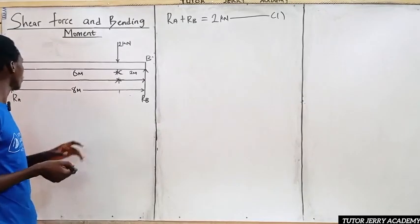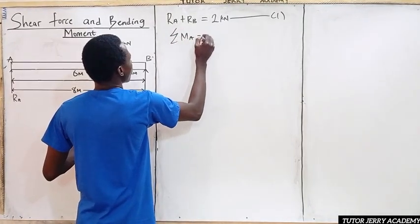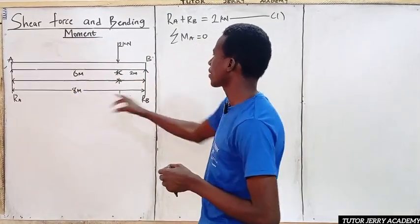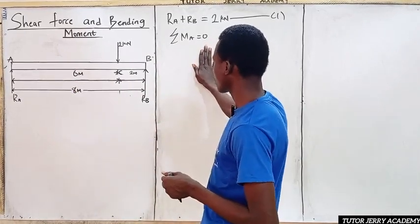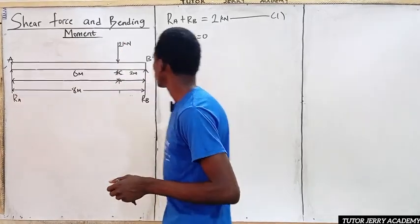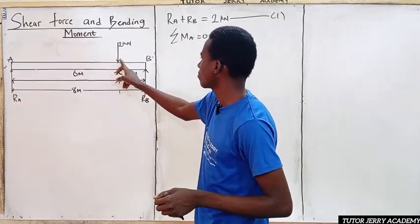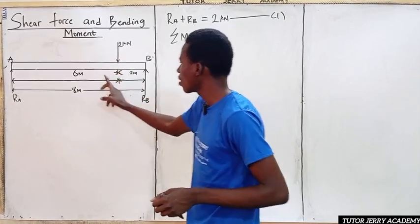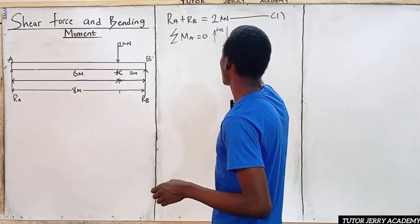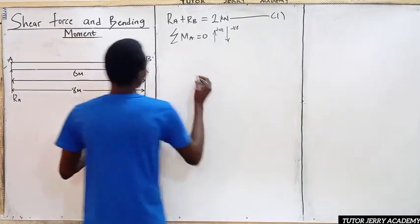Next, we are going to take moments from point A. The summation of moments at point A will be equal to zero. Moment equals force times perpendicular distance. We have Rb multiplied by the perpendicular distance of 8 meters, minus 2 kilonewtons multiplied by 6 meters — considering upward forces as positive and downward forces as negative.